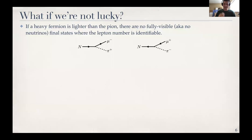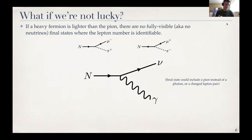So what if we're not lucky? And what if N is light and it can't decay, for instance, into a muon and a pion into one of these fully visible, fully charged final states? For instance, if N is light, then its decays will look like something like N goes to a neutrino and a photon, or N goes to a neutrino and a pion, or N goes to a neutrino and a pair of charged leptons. Because there's a neutrino in the final state, which will go off undetected, the lepton number of the final state is unidentifiable, at least on an event by event basis. So we can't perform this measurement of ratios that I proposed.